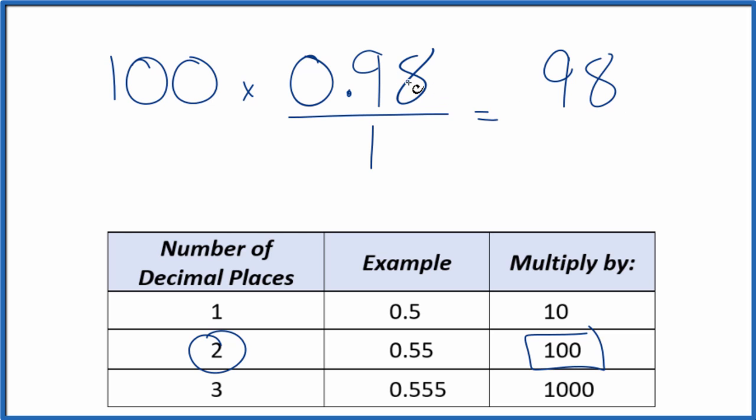But we can't just multiply the numerator by 100. We also have to multiply the denominator by 100. That's because 100 divided by 100 is 1. So we're multiplying by 1. It doesn't change the value, just the way we represent it here. So 100 times 1, that's 100.